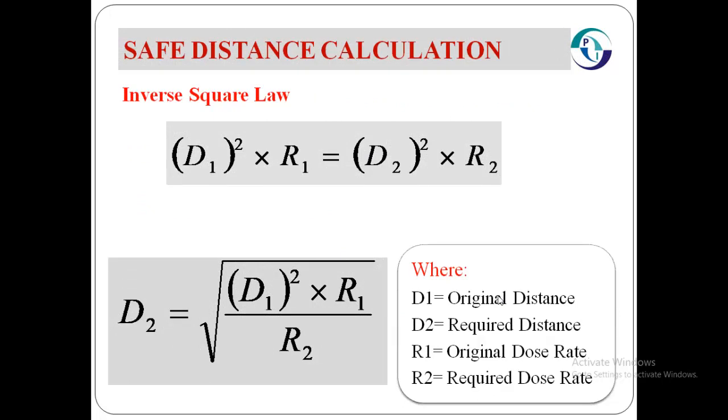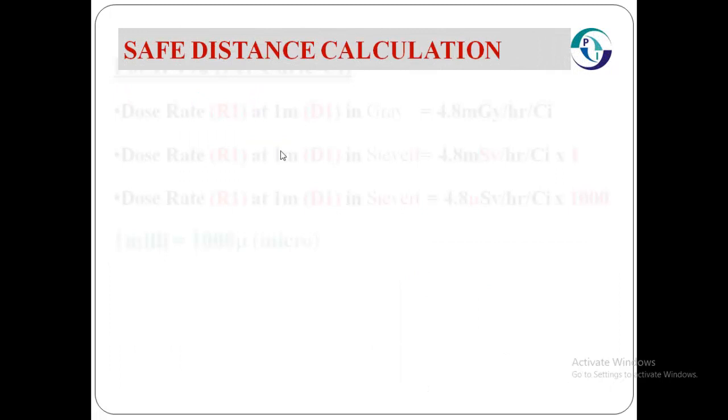We must use the inverse square law which is (D1)² × R1 = (D2)² × R2, where D1 is the original distance in meters, D2 is the required distance in meters, R1 is the original dose rate in microsievert per hour, and R2 is the required dose rate in microsievert per hour.